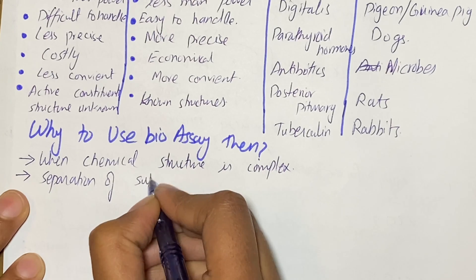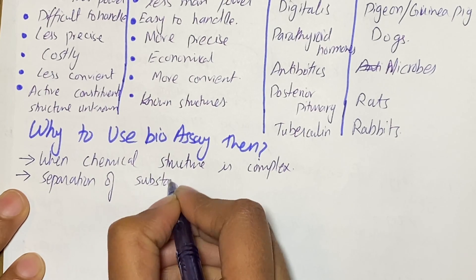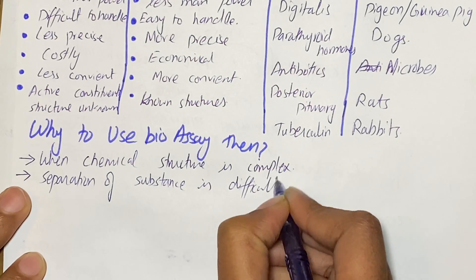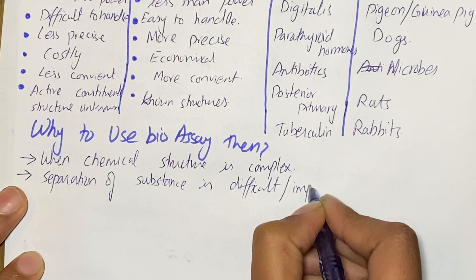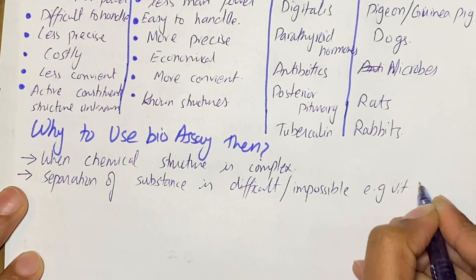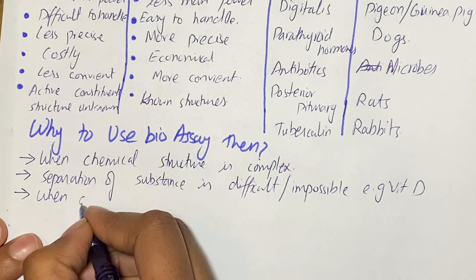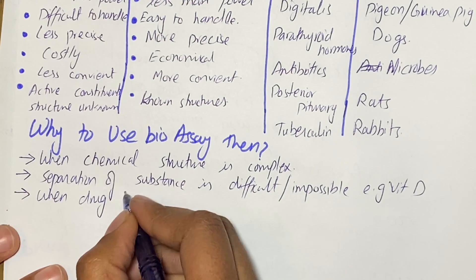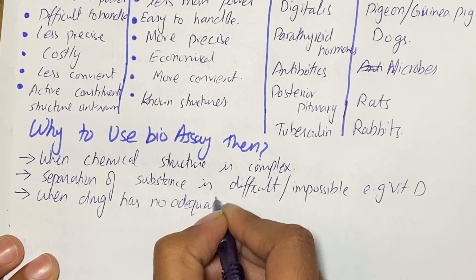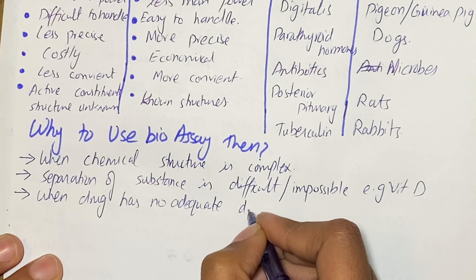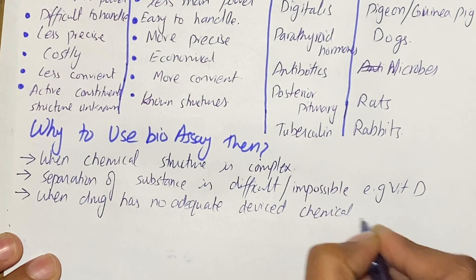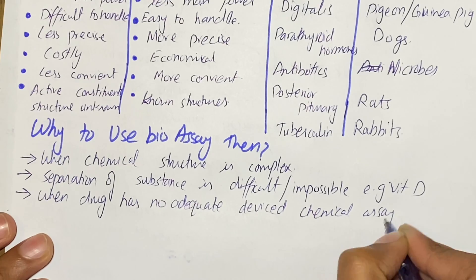The second reason is when separation of a substance is difficult or impossible. For example, vitamin D is difficult to separate from other substances, so in such conditions we use bio assay. We also use bio assay when a drug has no adequately devised chemical assay — for instance, insulin.